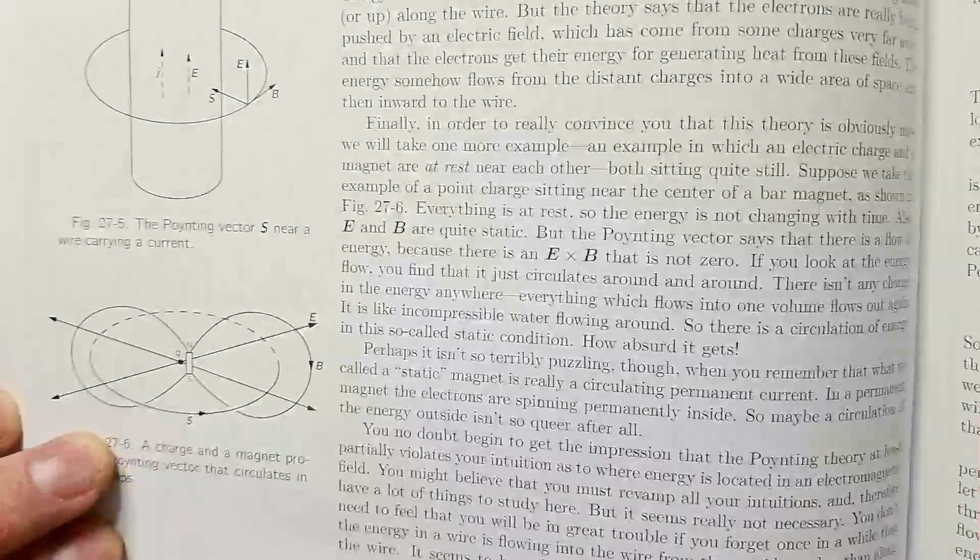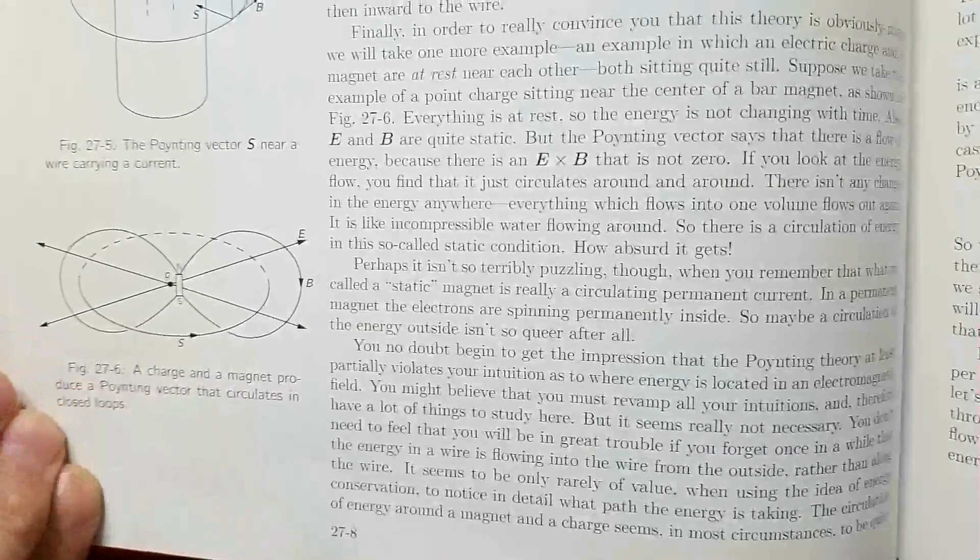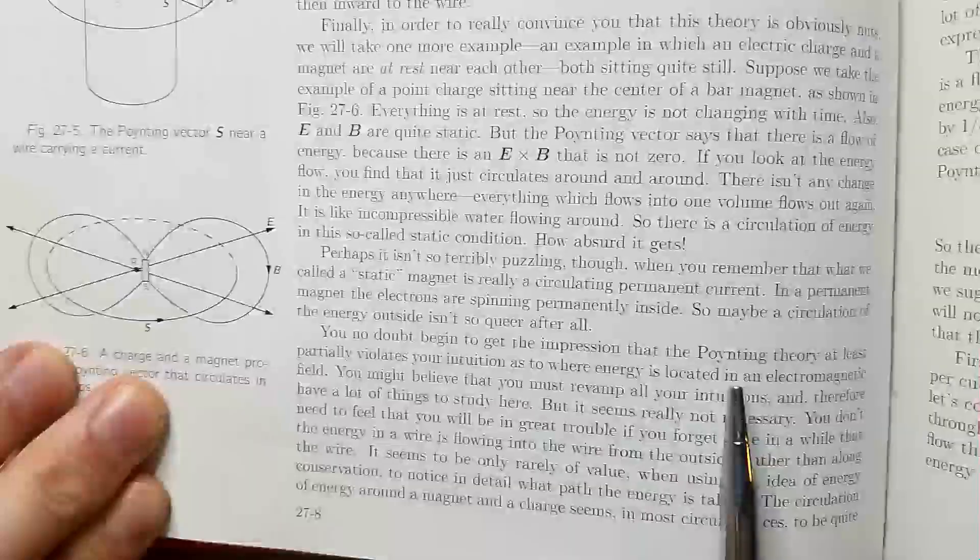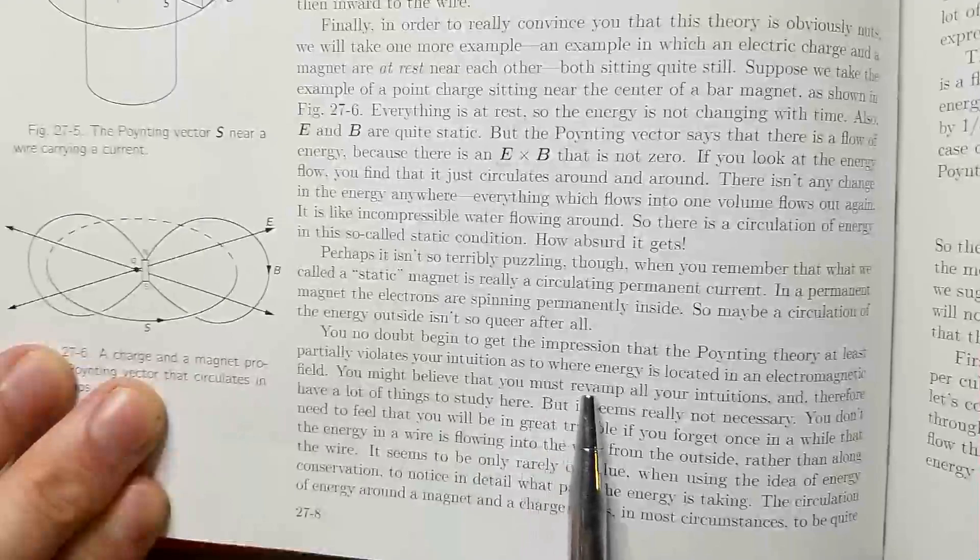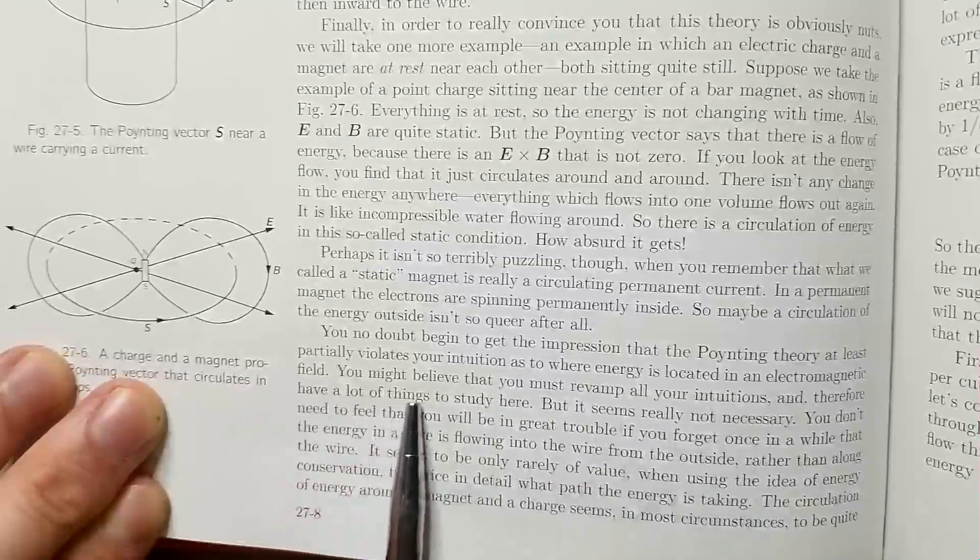But let's see how Feynman concludes this great section 27. Here, in the last paragraph, Feynman says, you might believe that you must revamp all your intuitions, and therefore have a lot of things to study here, but it seems really not necessary.